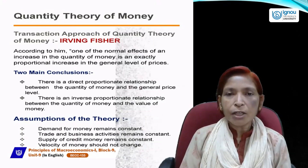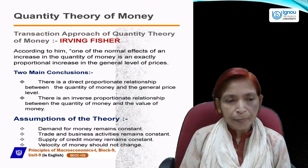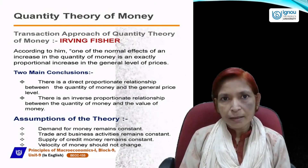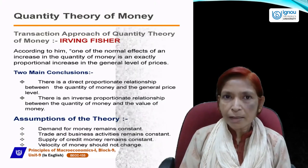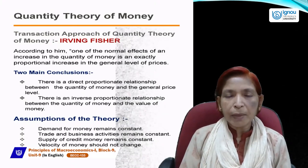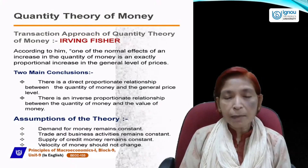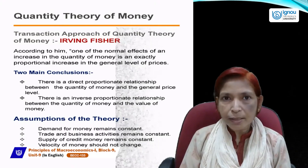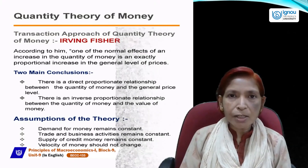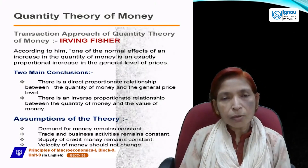Whenever RBI issues paper currency, money supply rises. Due to the rise in money supply, people's purchasing power also rises. When the demand of people rises but supply cannot increase due to scarcity of resources, price level will rise. So there is a direct and proportionate relationship between money supply and general price level according to Irving Fisher.